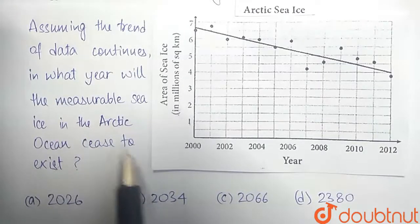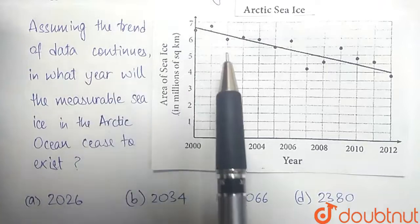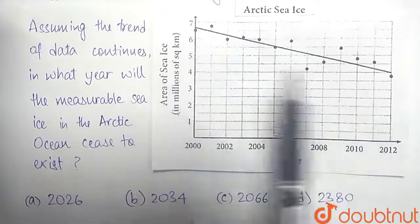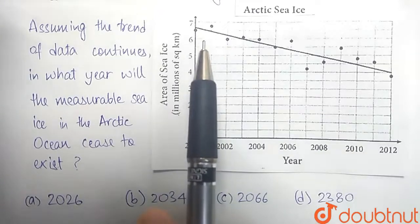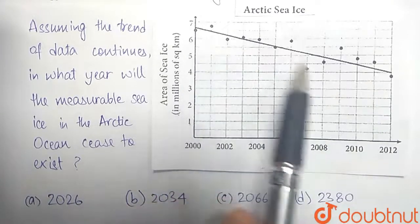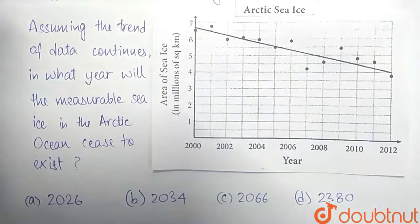The trend of data they are talking about here is this line of best fit, as it represents the best slope that describes this scatter plot.